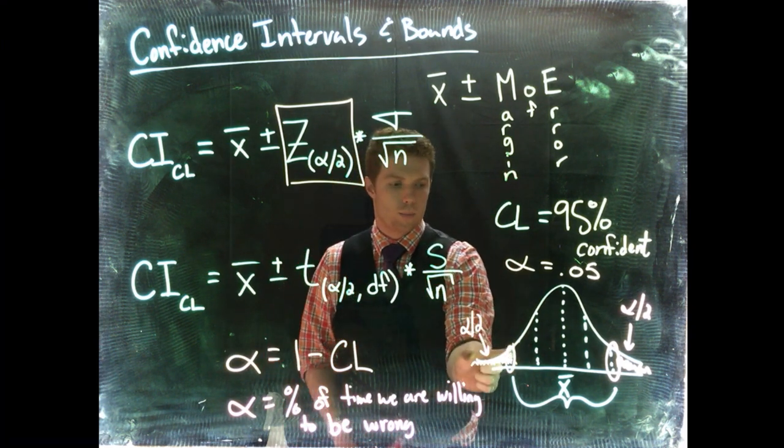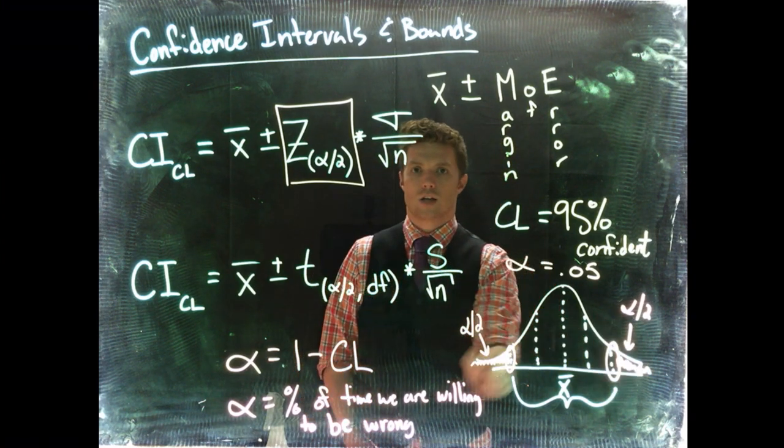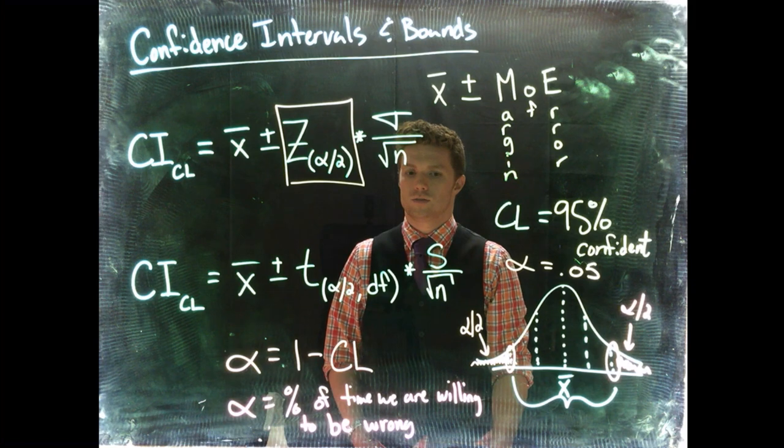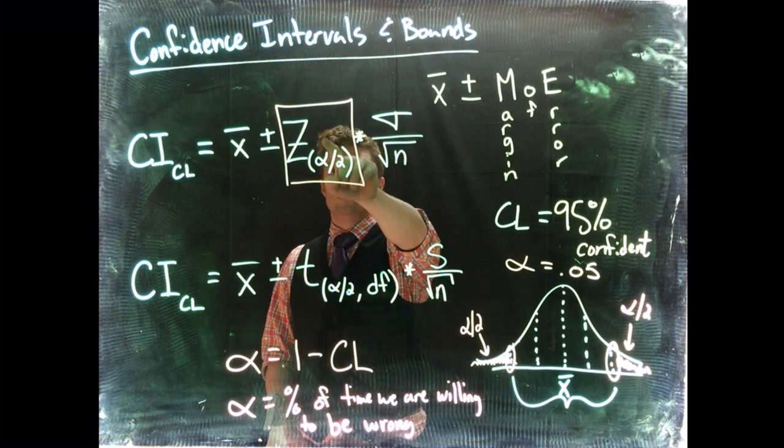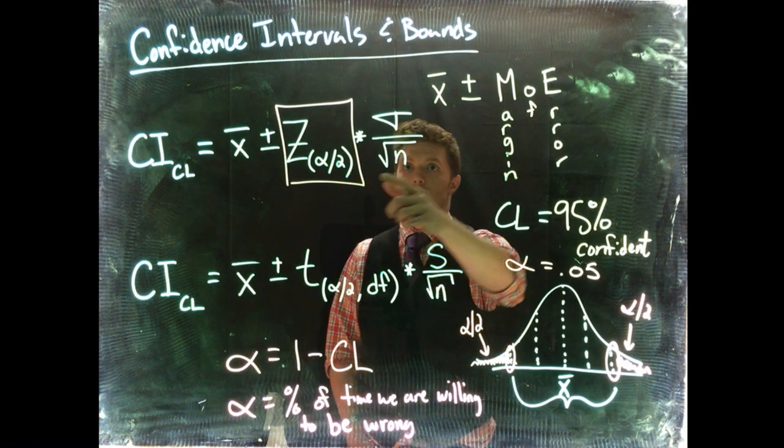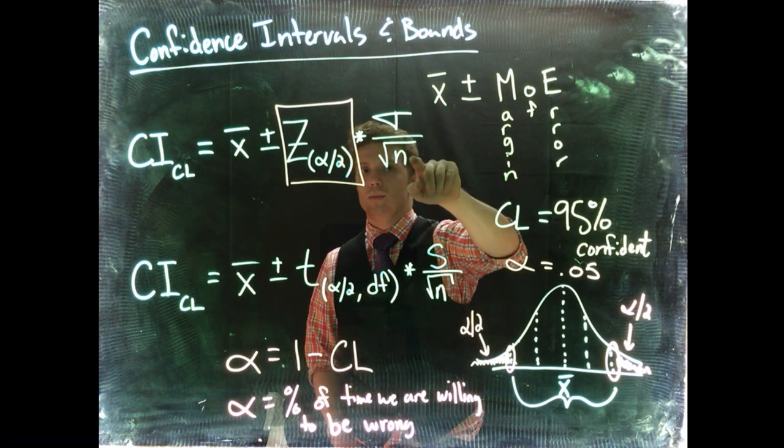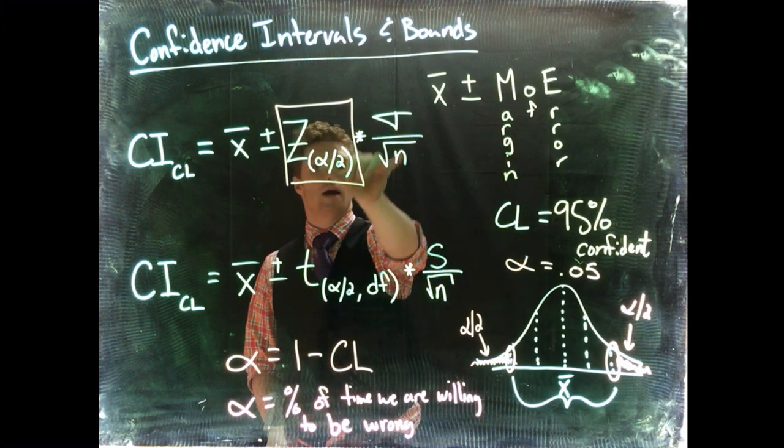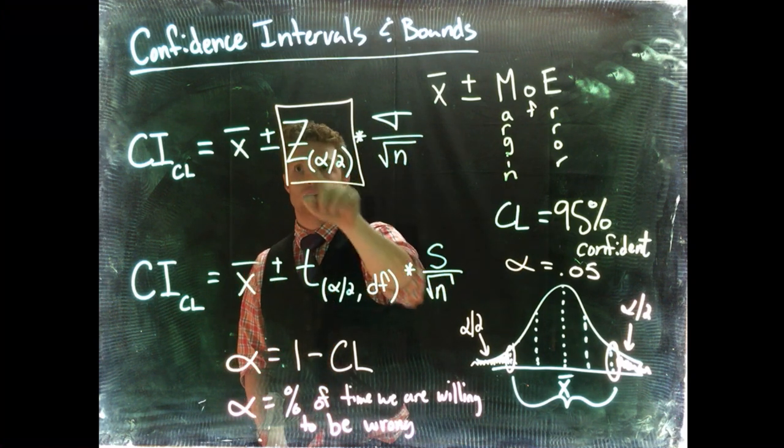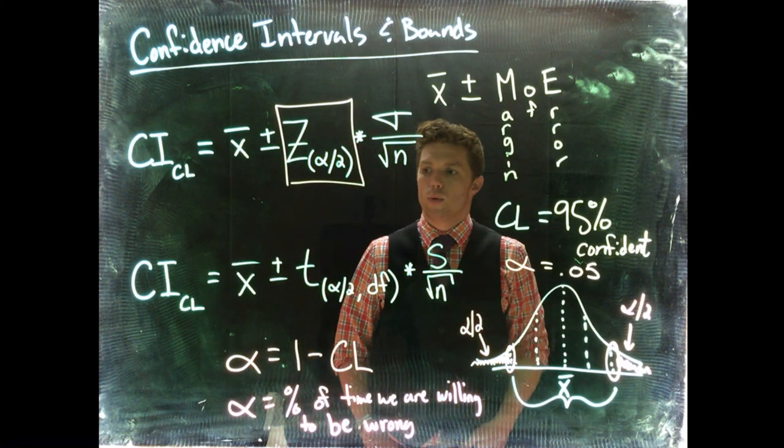And so coming back to this, the alpha lets us know that alpha divided by 2 lets us know that we're separating our error to the top and bottom of our confidence interval. That lets us know what this z-score is. And we have to use our software tools to calculate this z. Sigma, if it's given to us from the population, we just plug it in, divide it by the square root of n. And we just do plus or minus this margin of error from our sample mean or our best point estimate.